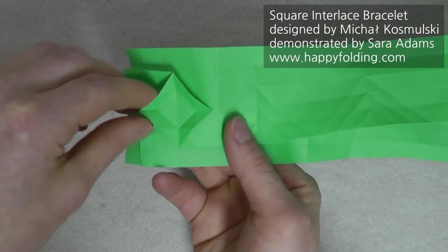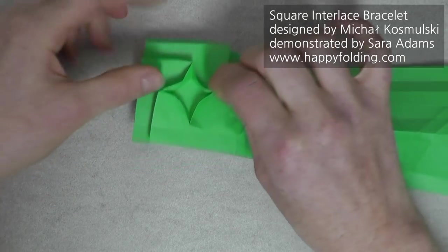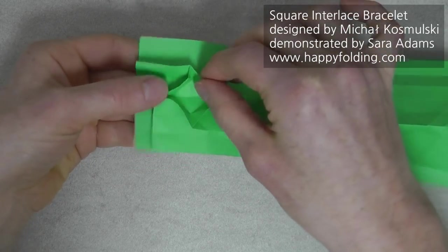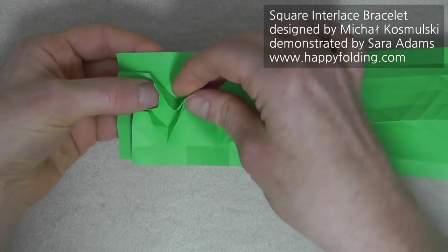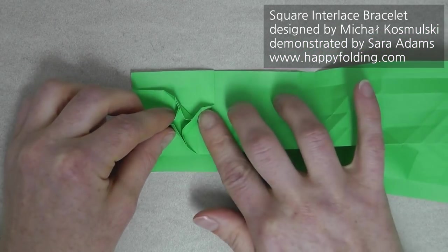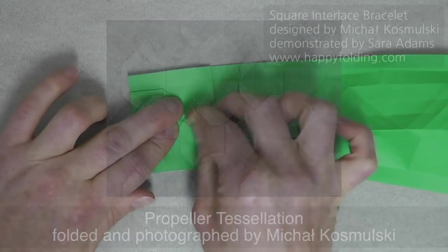just having those pop up and pinching the corners. And then we want to fold this in along the crease lines of the outer diamond. So if we do that, we get this windmill shape. You can use this molecule to fold Michal's propeller tessellation.